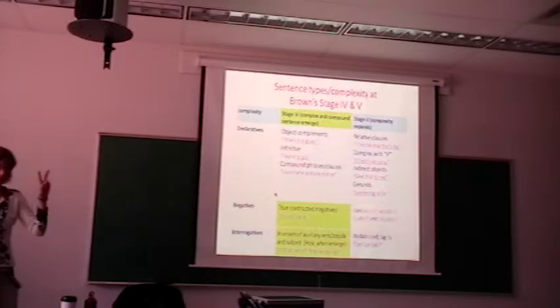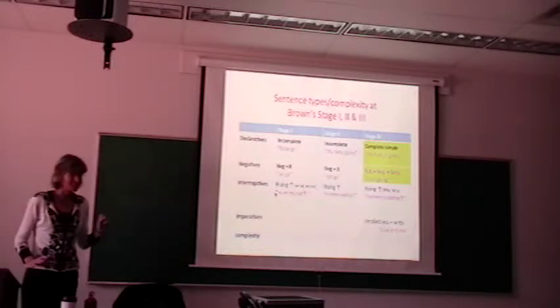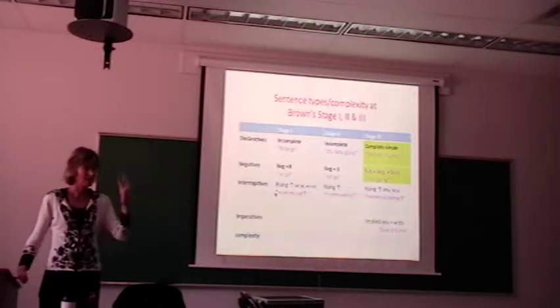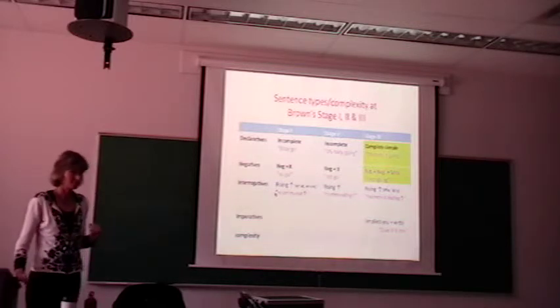Alright, so what's the big changes, two big changes for negatives? What are they? At stage? And what happens at 3? The negative follows the subject. And what happens at stage 4? True contracted negatives. Those are the big things for negatives.